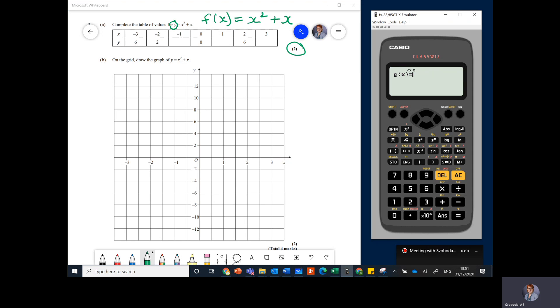On the ClassWiz it will then ask you for what g of x is, because it can do two at a time. If you don't have a second function just press equals and it will just ignore it. On the older models it doesn't do this. Now the table range, the start and the end - this is the range of x. So the start value of x is minus three.